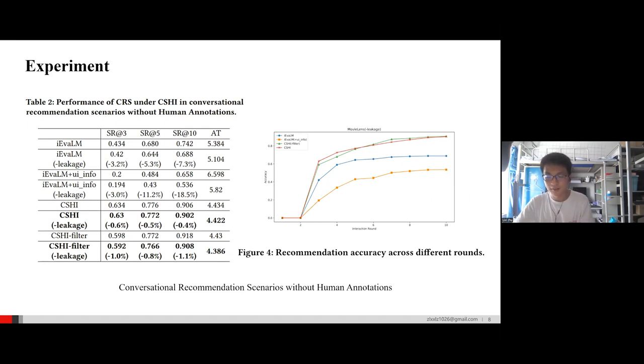In the second scenario, when utilizing CRS-based user simulators, the CRS exhibits good performance in terms of both recommendation accuracy and average number of interaction turns. This advantage stems from CRS's plugin-based way of working, which renders the output of the user simulator agents more controllable.